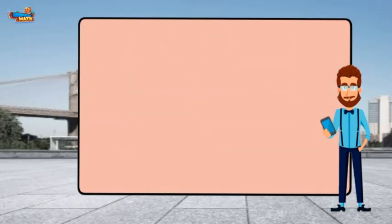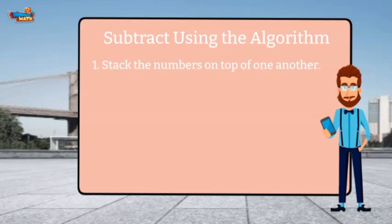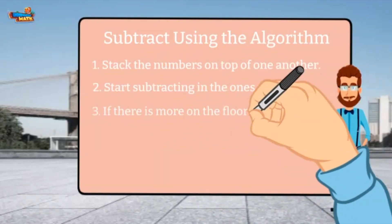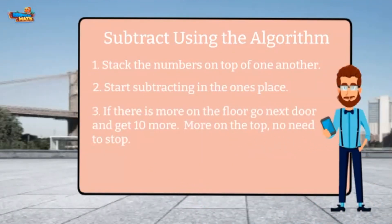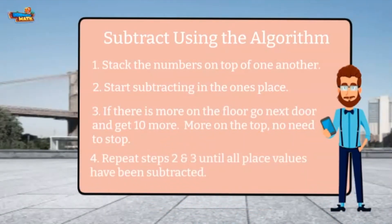I can also use steps to subtract using the algorithm. Stack the numbers on top of one another. Start by subtracting in the ones place. If there is more on the floor, go next door and get 10 more. More on the top, no need to stop. Repeat steps 2 and 3 until all the place values have been subtracted.